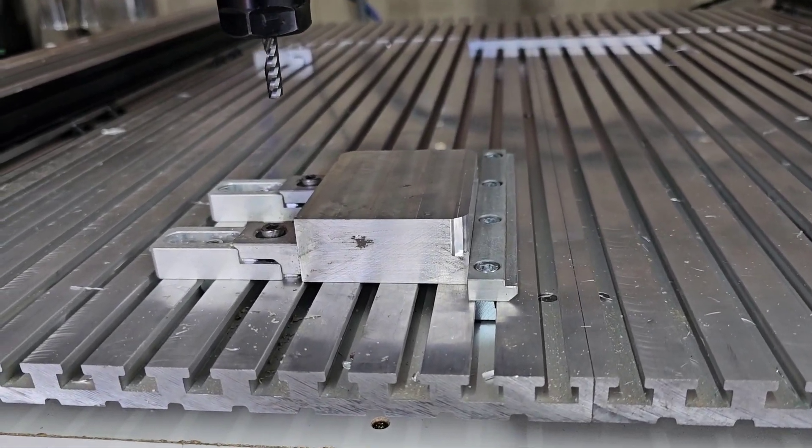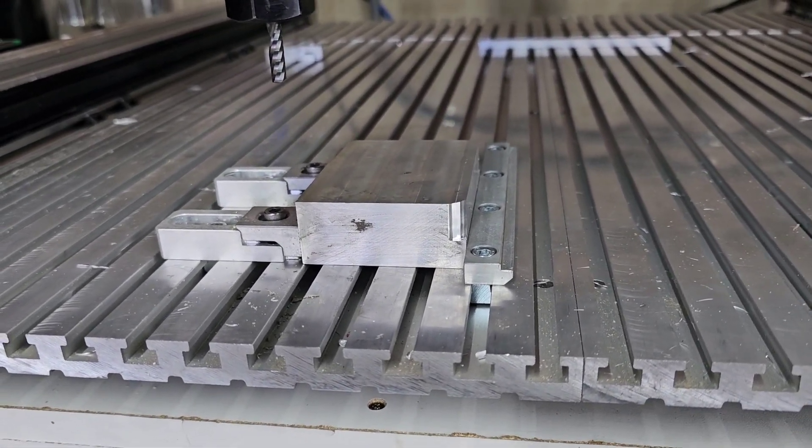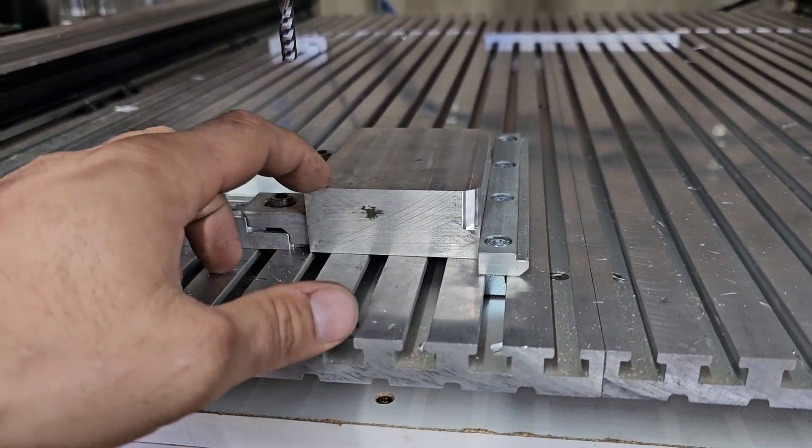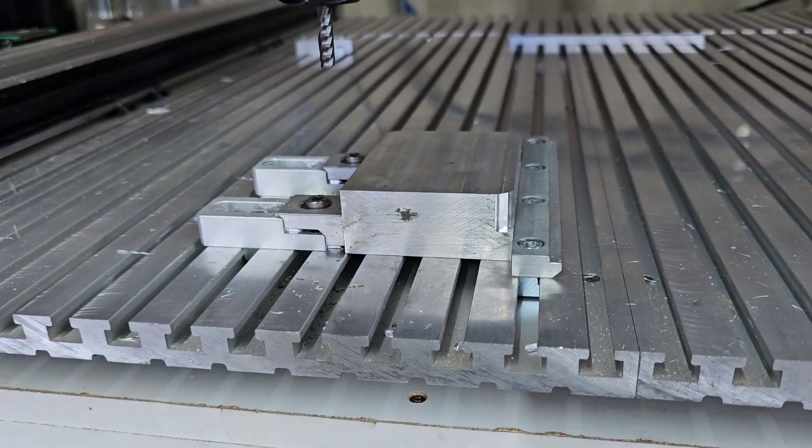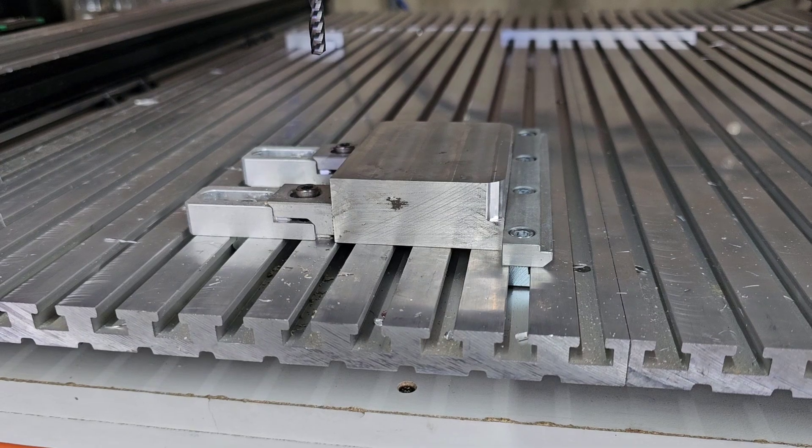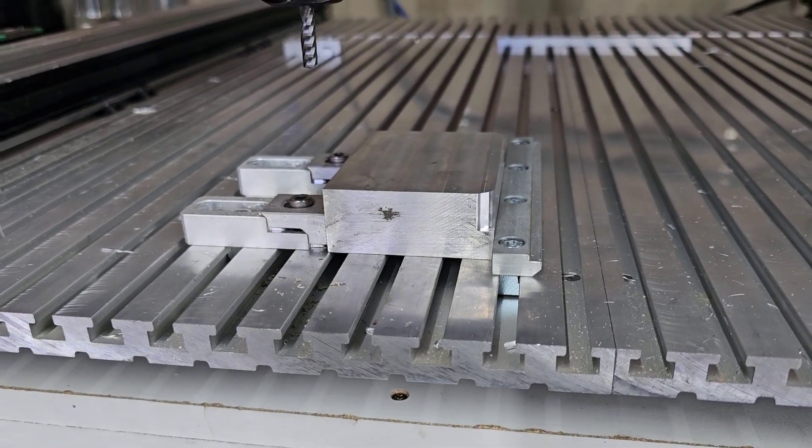Alright, so we've reset the Z. I just took the offset off and I re-zeroed out on there. I basically dropped the tool down very slowly until I saw it scratch and I set that at Z. Hopefully that fixed it and we don't eat through things we're not supposed to this time.